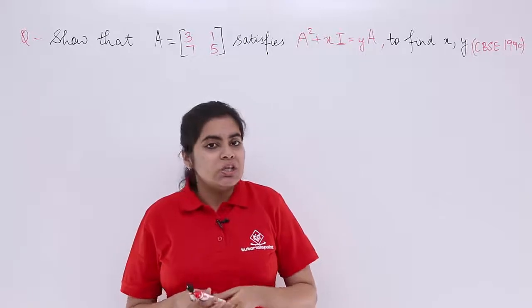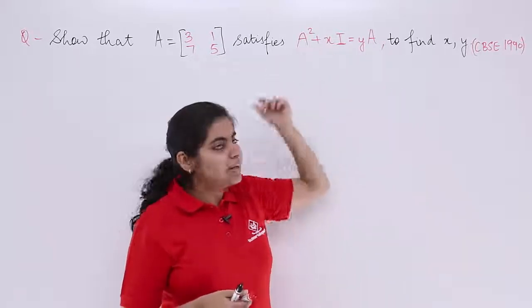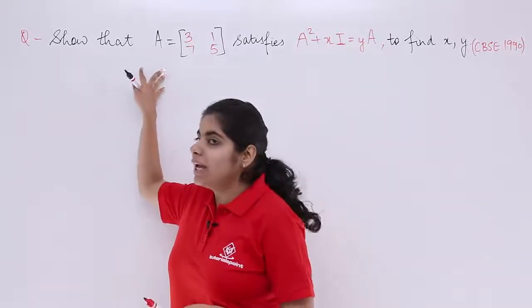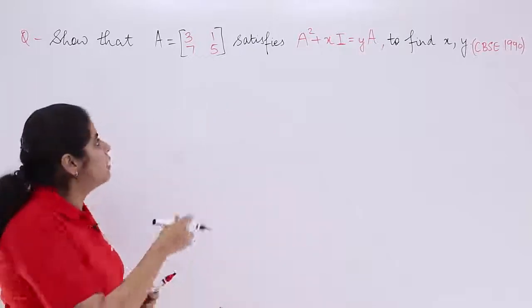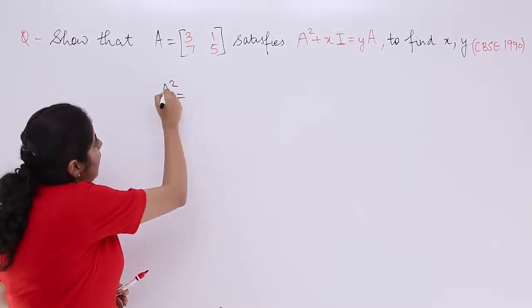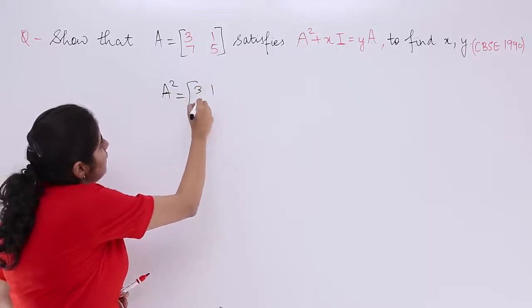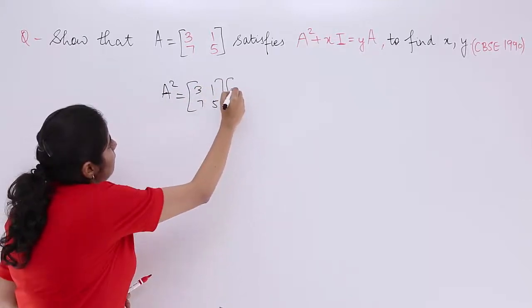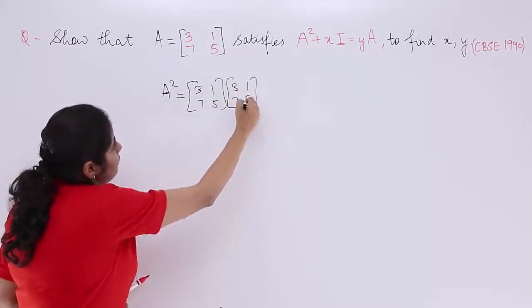Let's see how to do it. The question requires me to find out A square. I have A, why to waste time? Just simply find A square. A square will be A multiplied by A. So it is 3175 multiplied by 3175.